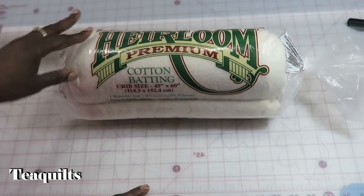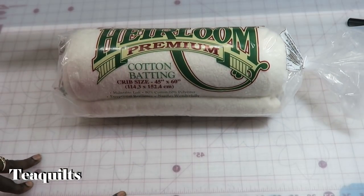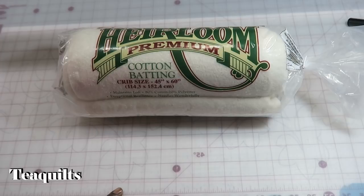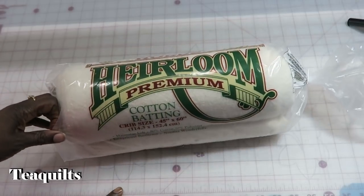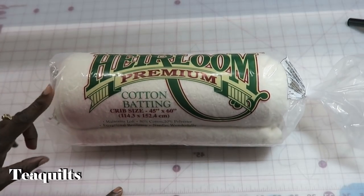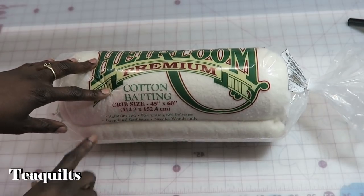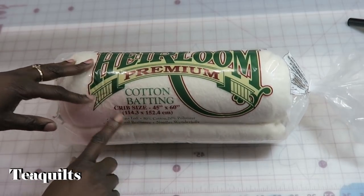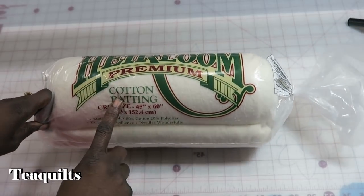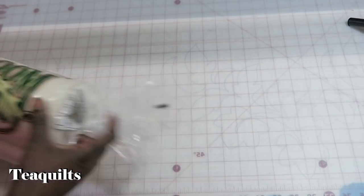I got Hobbs Heirloom Premium Cotton Batting, the 80-20 blend, and I got it in a crib size because I did not want to cut my 90 inches or my 108 inch wide batting for a baby quilt. I'm actually making a baby quilt and I'll have a video up about that as well.